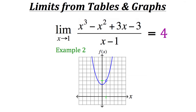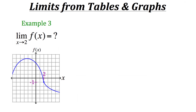For example 3, we have another function and its graph, and we want to find the limit as x approaches 2. We follow the function and approach x equals 2 to see what value it gets close to. Whether we're coming from the left side or the right side, the function gets closer and closer to negative 1. So we can conclude that the limit of this function as x approaches 2 is negative 1.